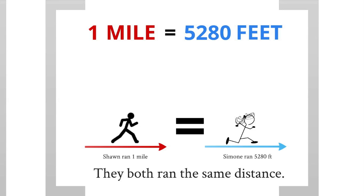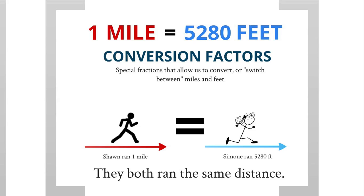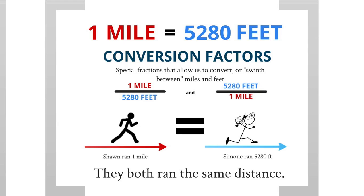This lets us set up what's called a conversion factor. Conversion factors are special fractions that allow us to convert or switch between miles and feet. For any given equality there are two conversion factors: 1 mile divided by 5,280 feet is our first conversion factor, and 5,280 feet divided by 1 mile is our second. These two fractions are the conversion factors that will allow us to convert or switch between miles and feet.